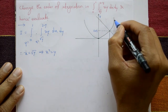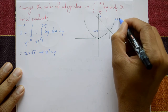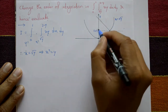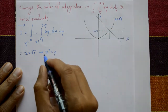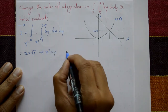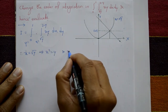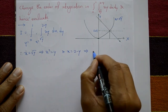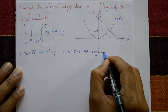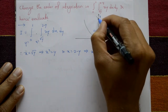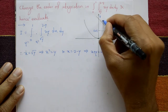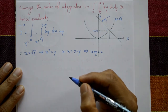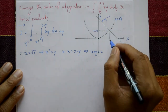The equation x = √y is a parabola symmetric about the y-axis. The second equation is x = 2 − y, which rearranges to x + y = 2. This is a straight line: x + y = 2.